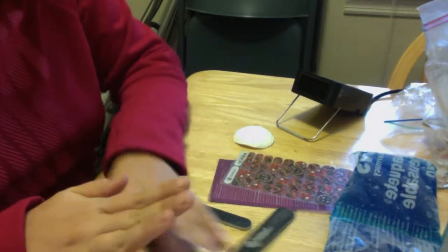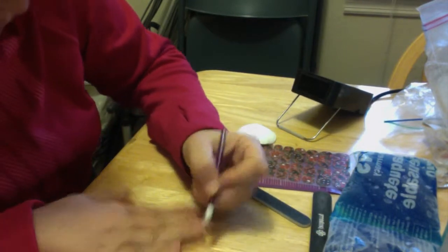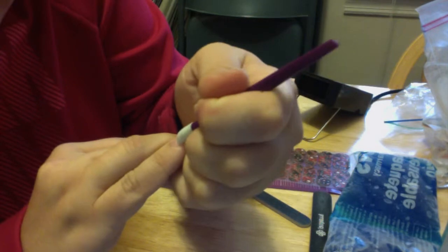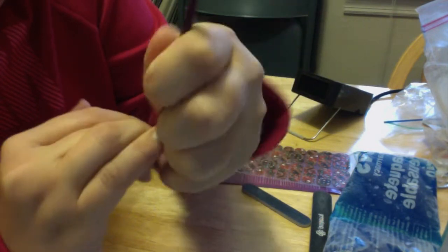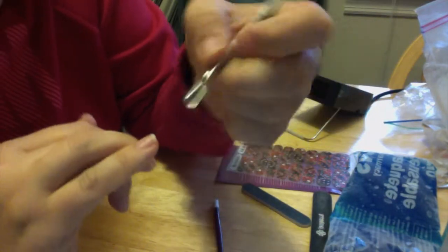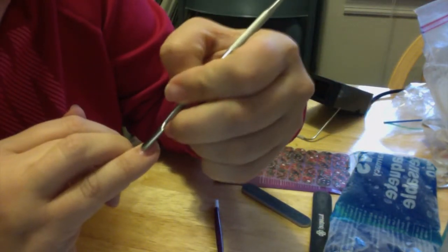First, you want to push back any cuticle that you have on your nail. To do so, you can take a cuticle pusher, one that looks like this and push back, or you can take one that looks like this and also push it back.